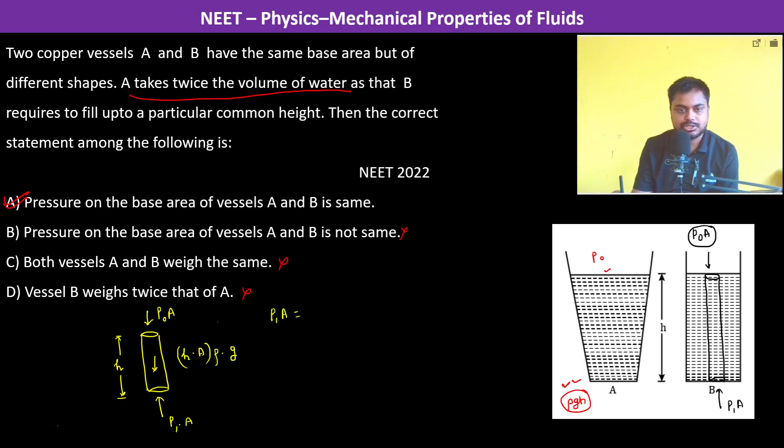Therefore, P₁A is equal to P₀A plus ρgh into A. A, A, A is gone. Therefore, P₁ is equal to P₀ plus ρgh.